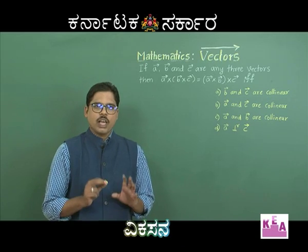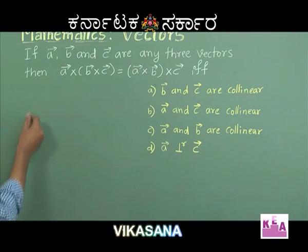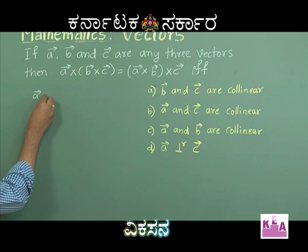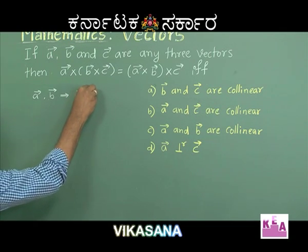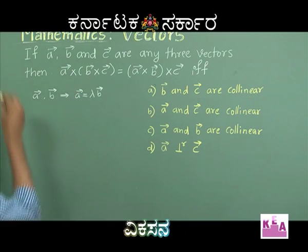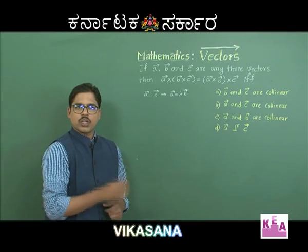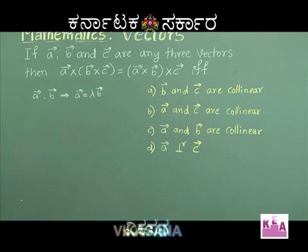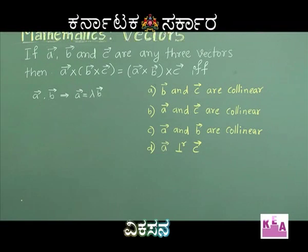Two vectors are collinear if vector A equals some constant times vector B. Now, if vector A, vector B, and vector C are any three vectors, then vector A cross (vector B cross vector C) is equal to (vector A cross vector B) cross vector C if and only if one of the given conditions holds.